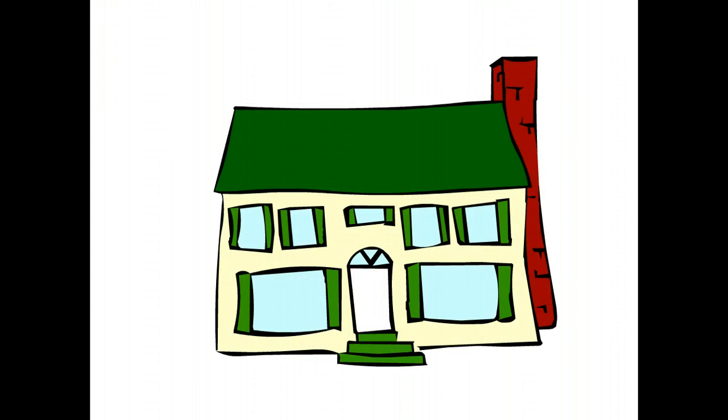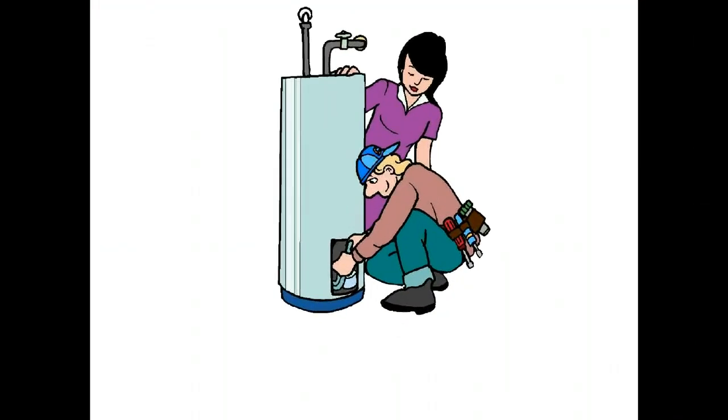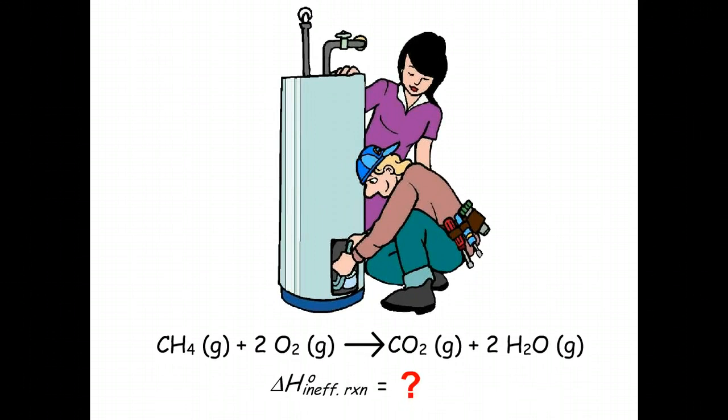Methane is the gas burned in household natural gas furnaces. The reaction that used to take place inside a typical home gas furnace is shown on the screen.